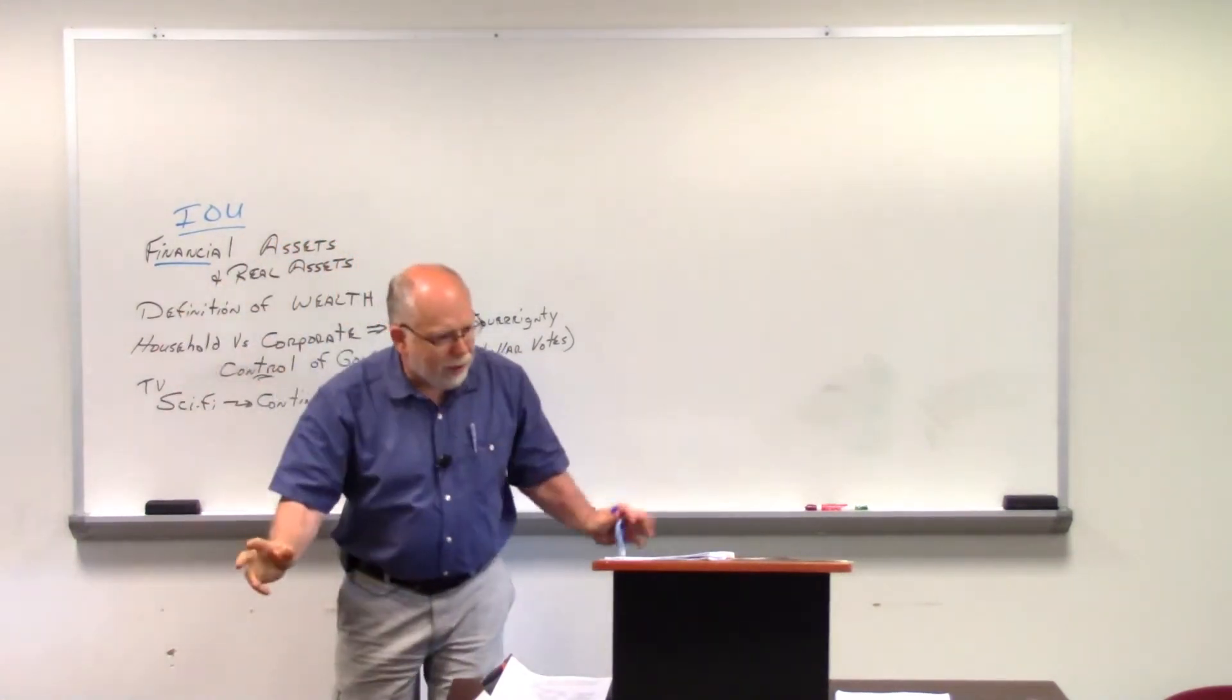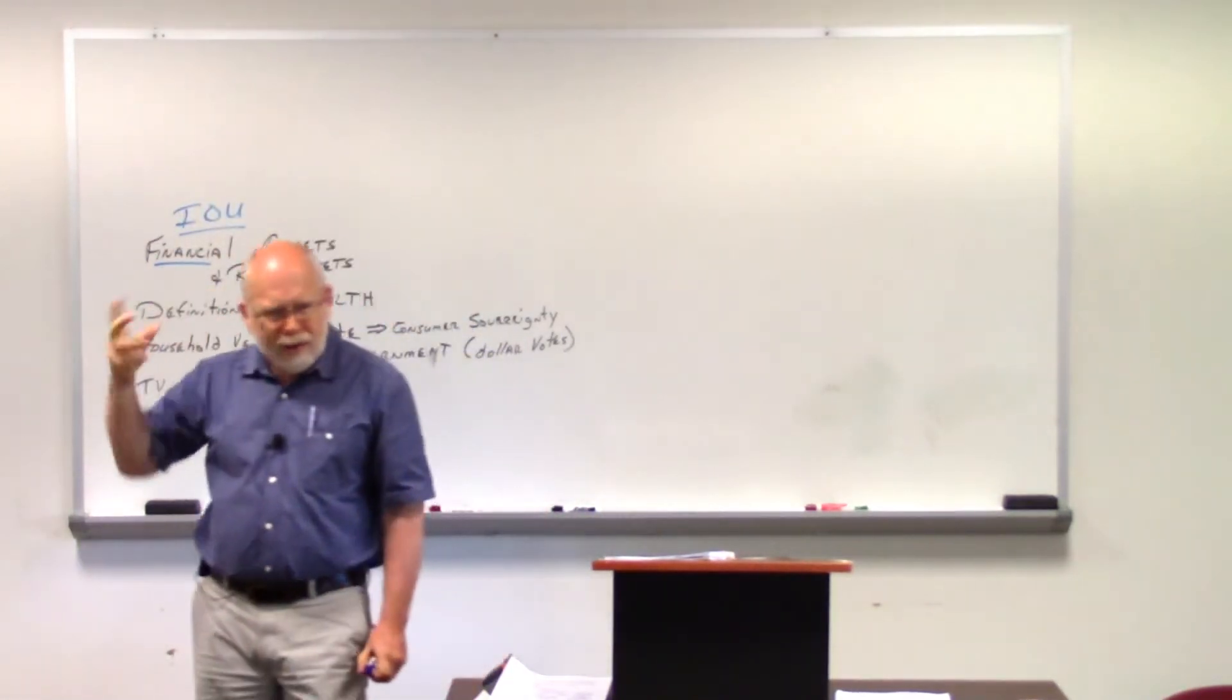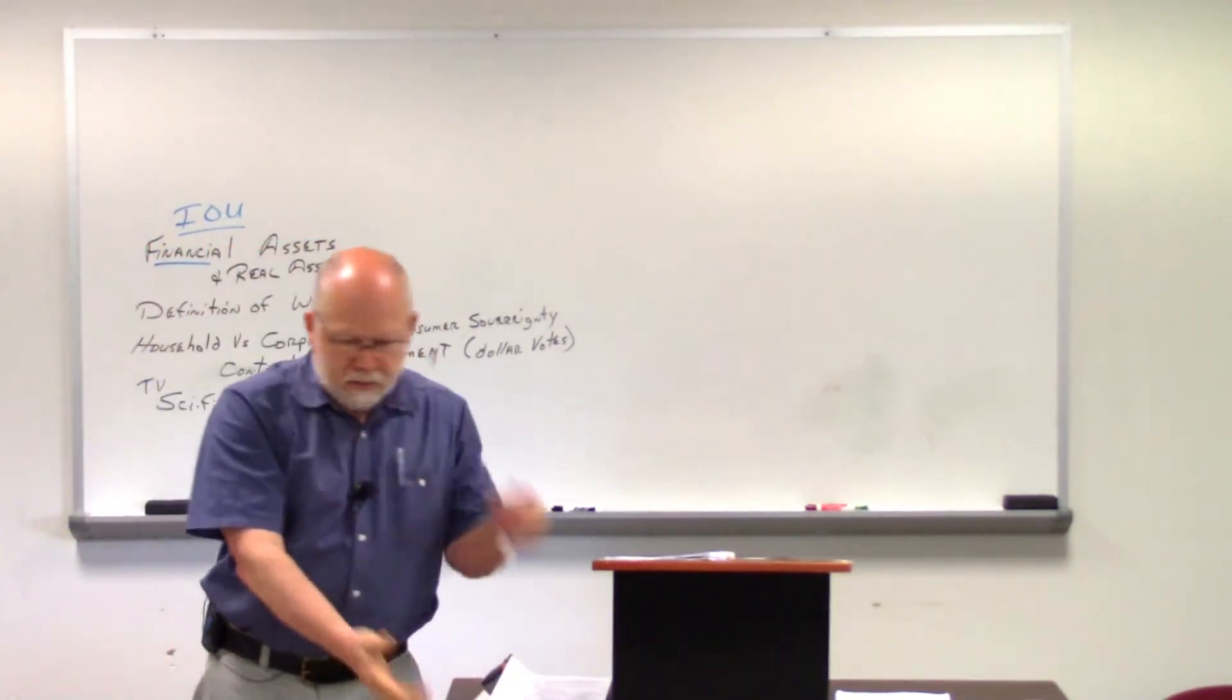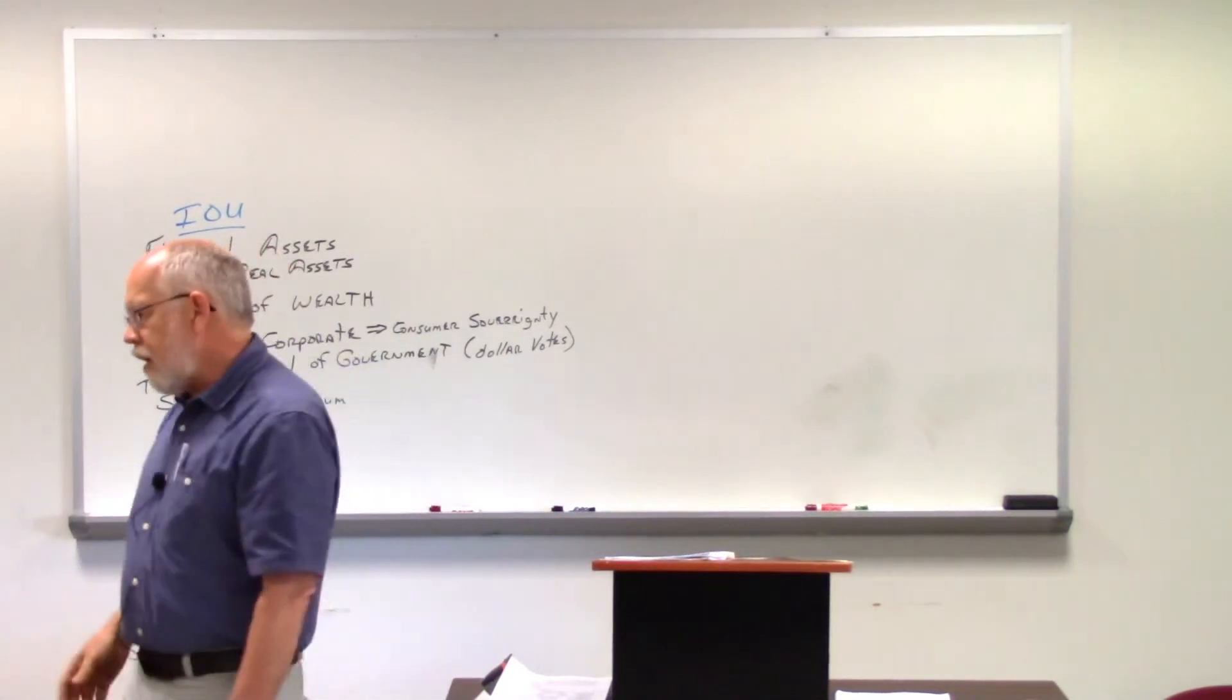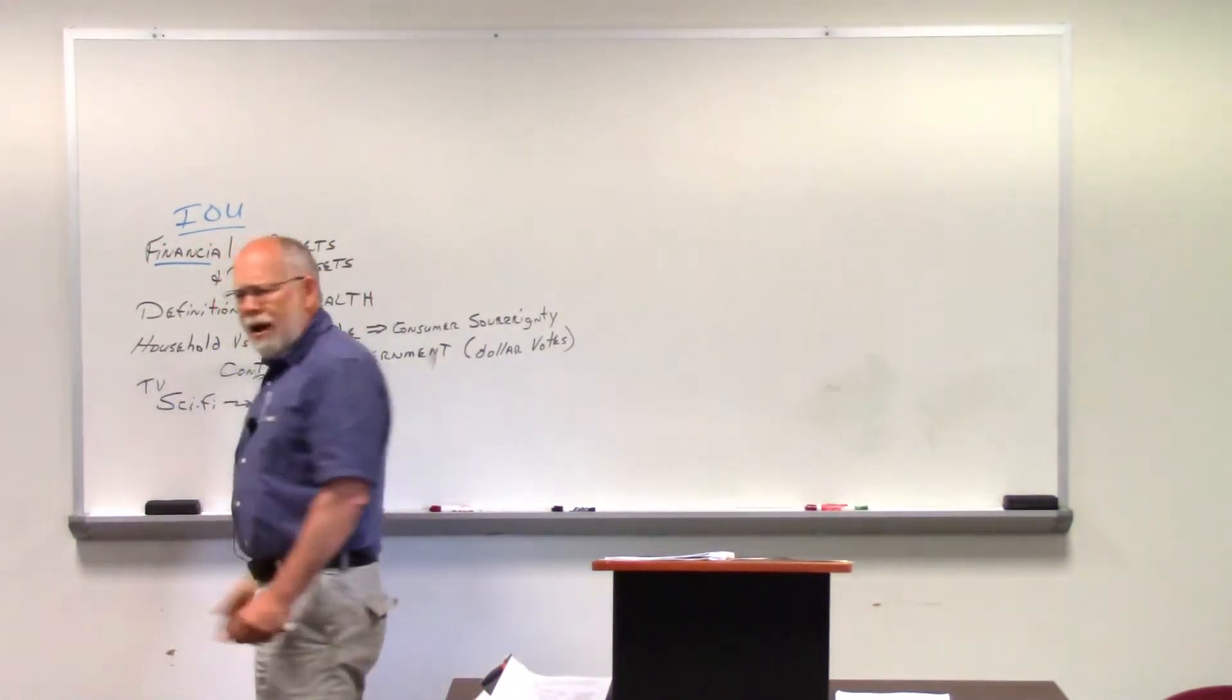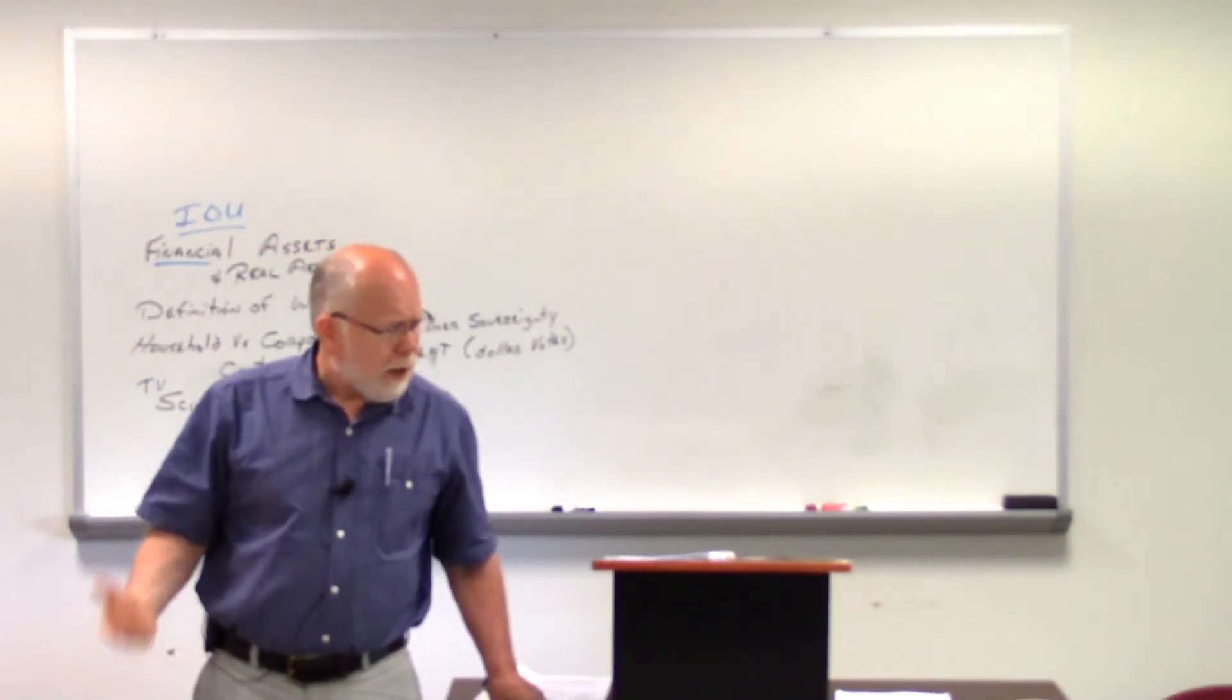Since we're not in an accounting class, I'm saying they're both a form of IOU. Well, it's obvious how a bond is an IOU. You gave them the money, they gave you a piece of paper, it's a promise to pay you back with interest. That's obviously a debt, obviously financial, obviously IOU. But how is a stock an IOU?